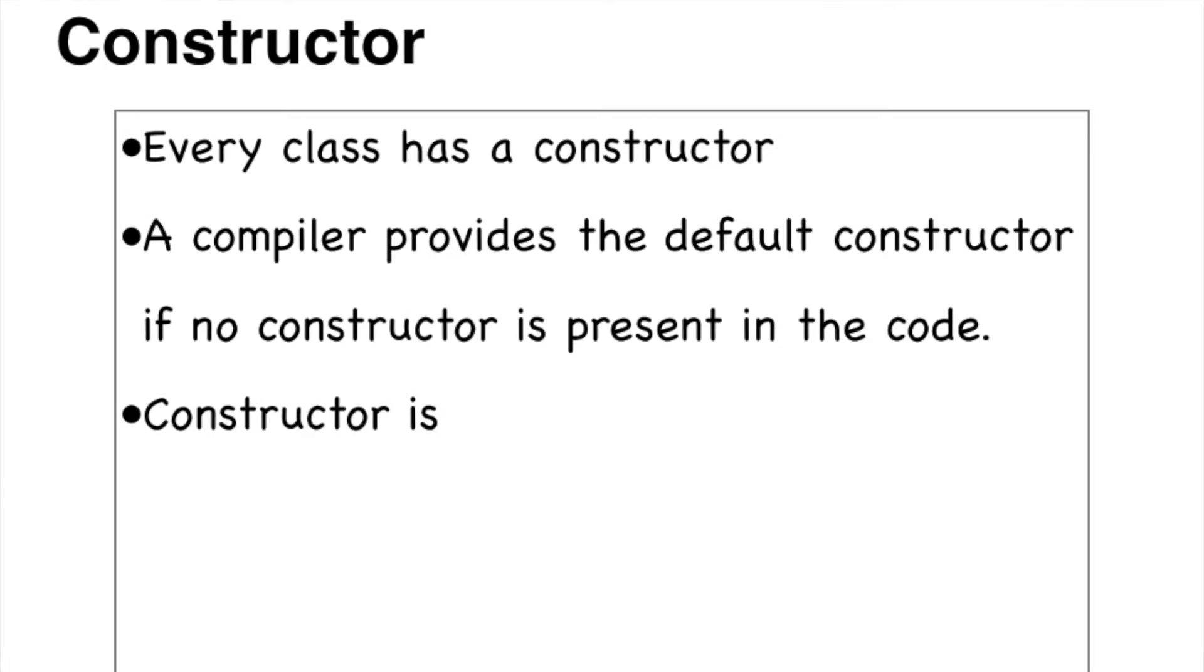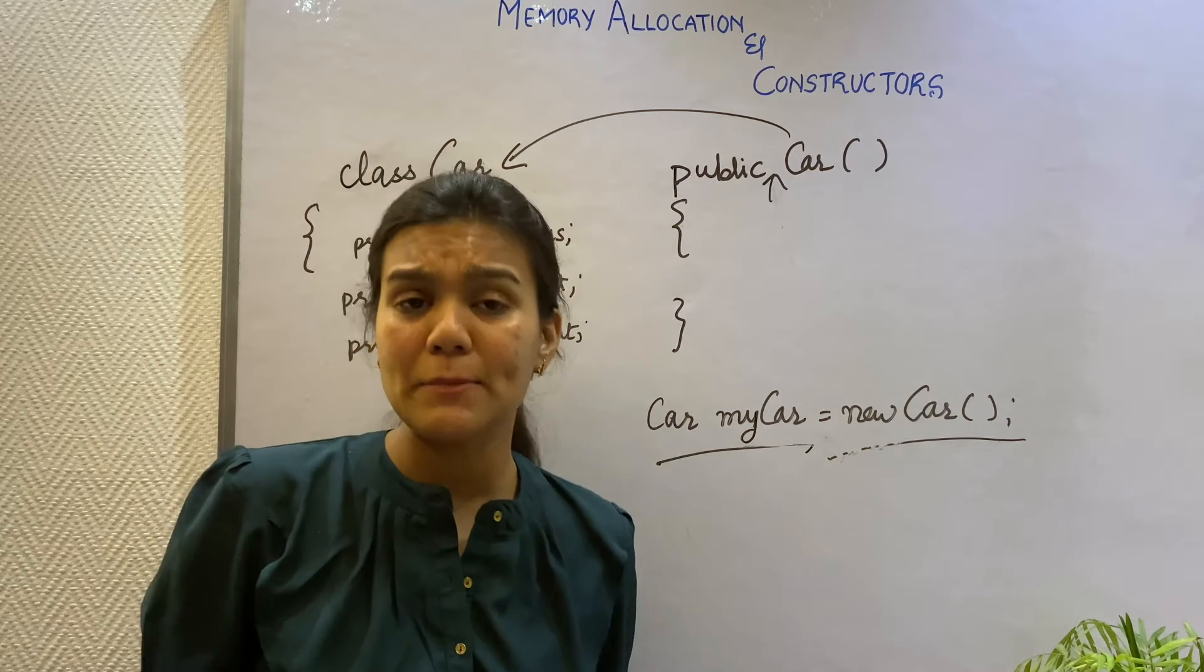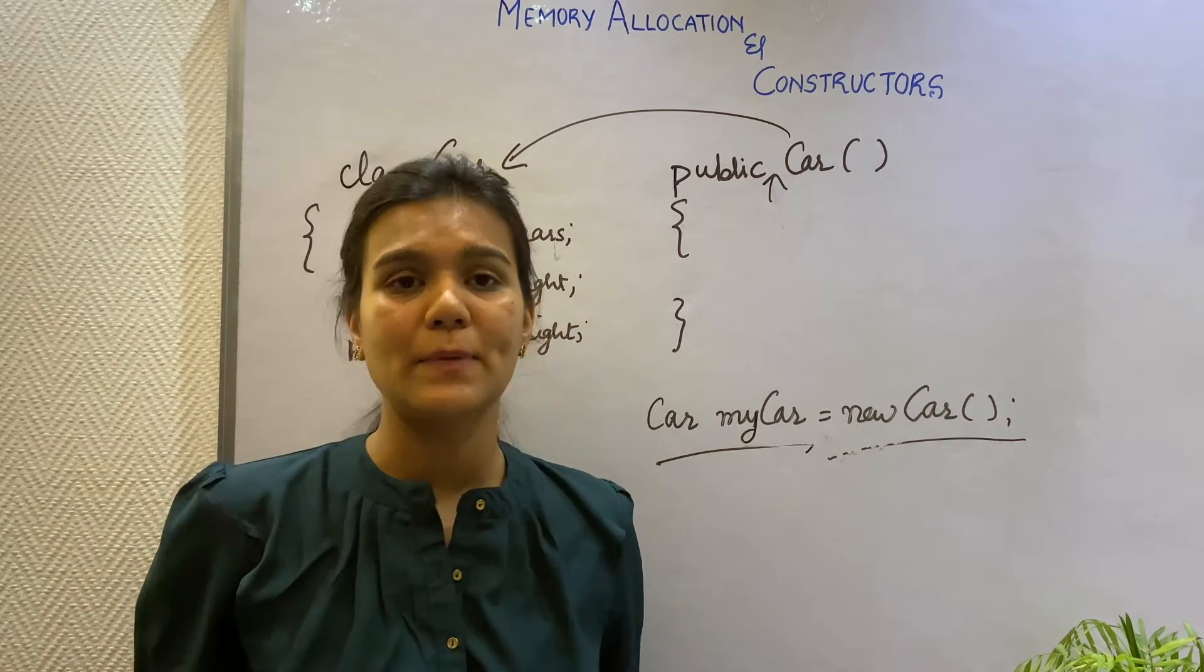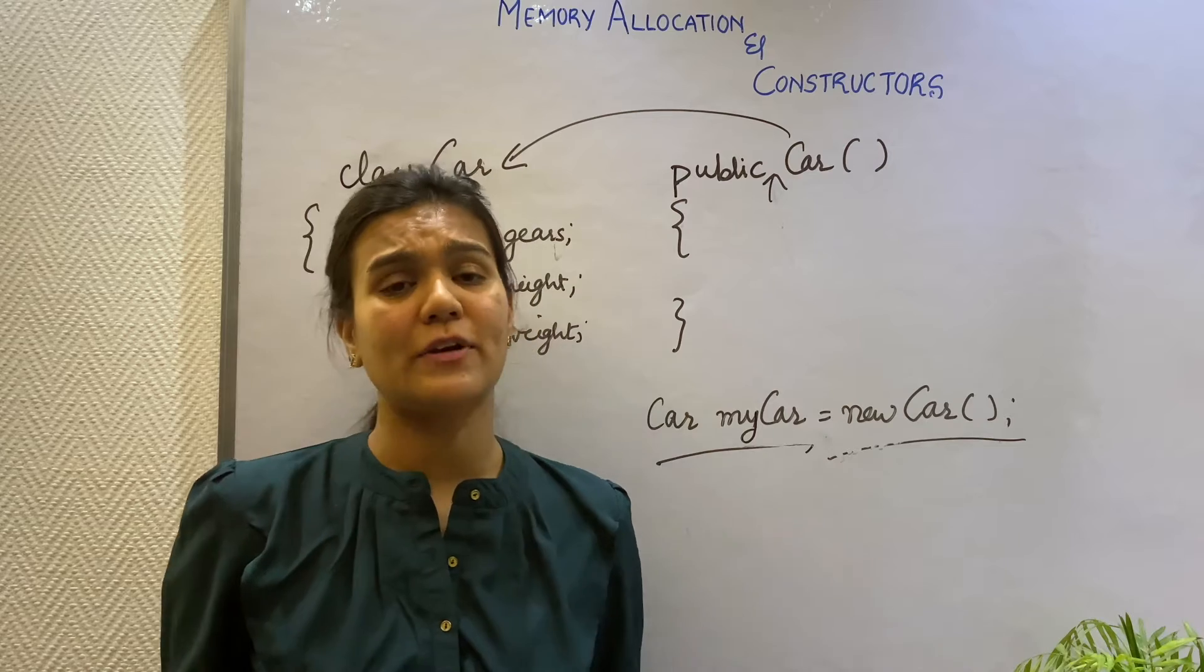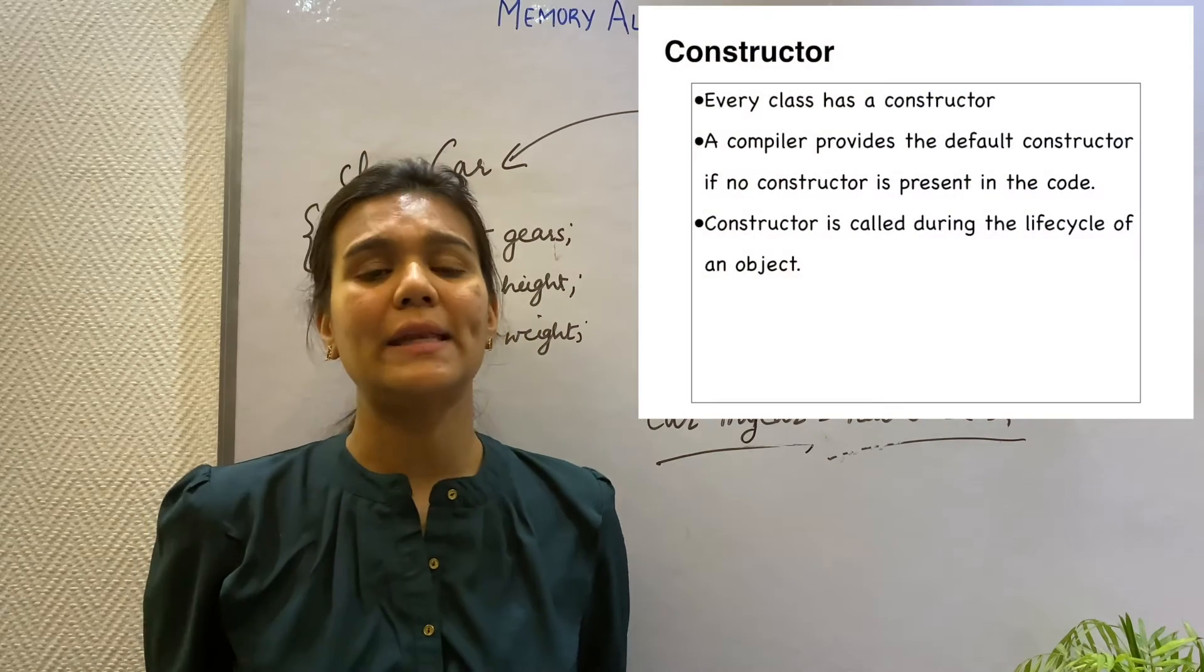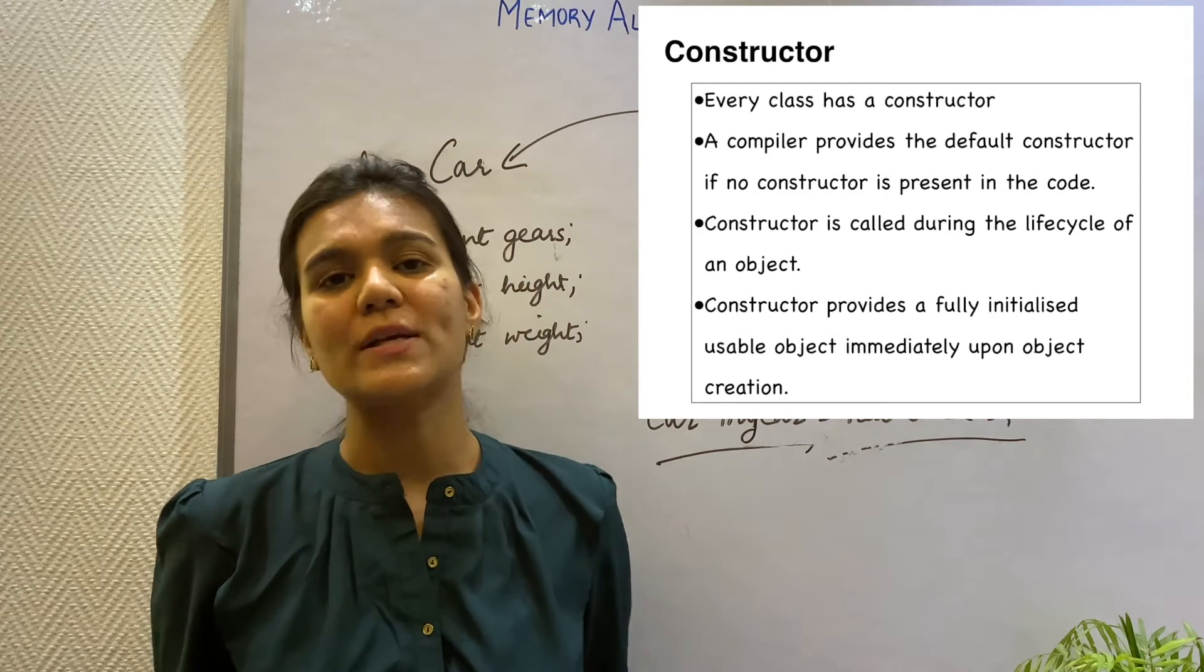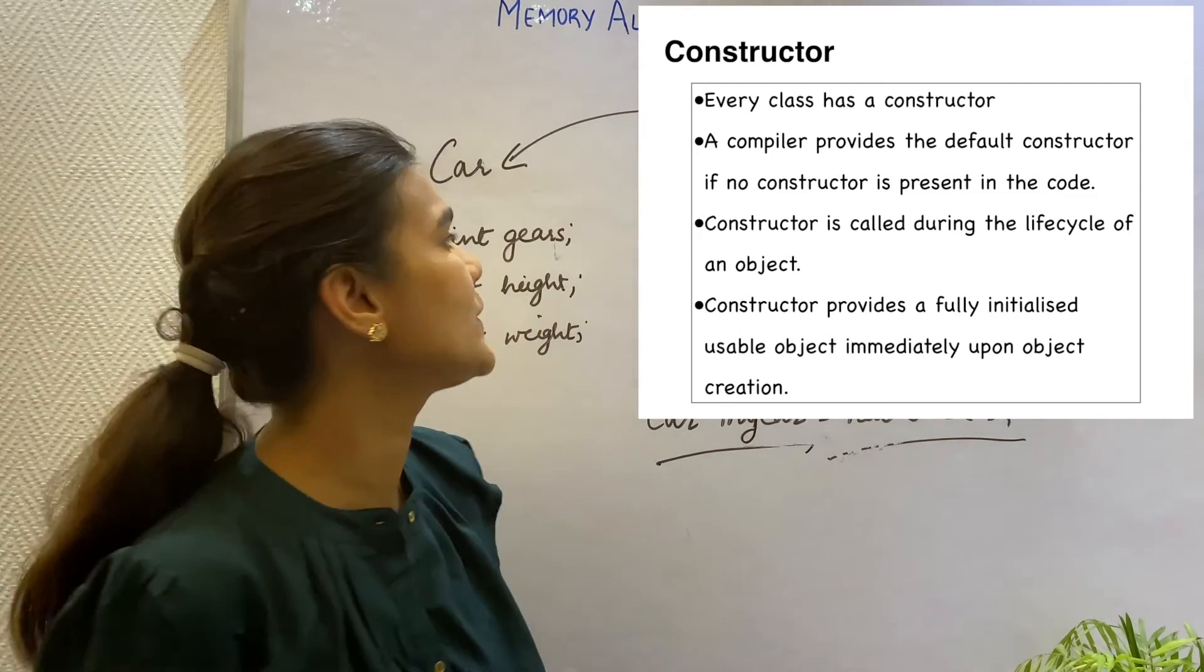The key feature of a constructor is that it is called during the life cycle of an object so that we can immediately create an object and start working on it. This implies that when an instance of a class is created, you can get a fully initialized usable object through constructor. I will show you with an example.